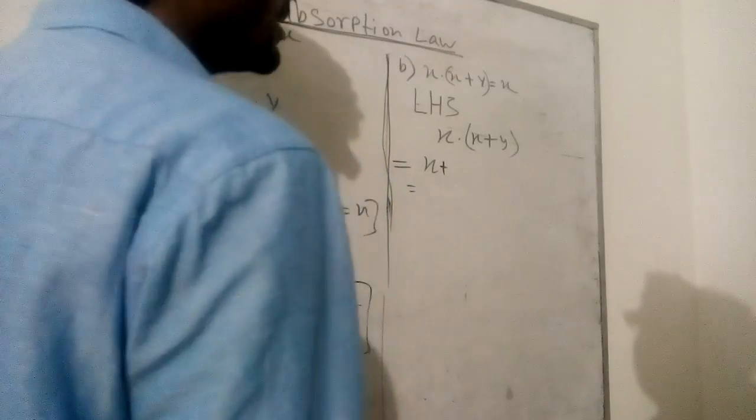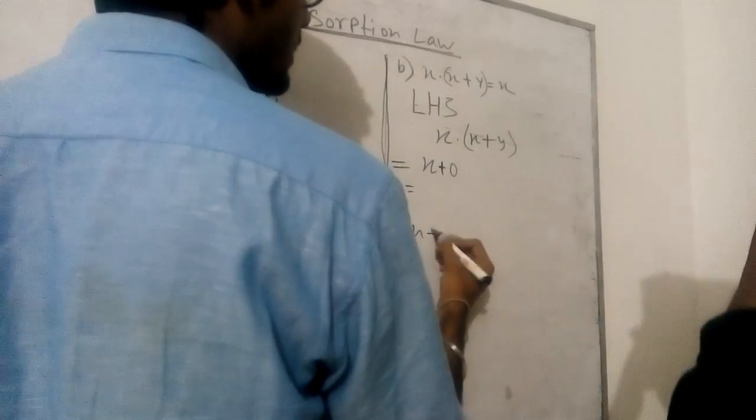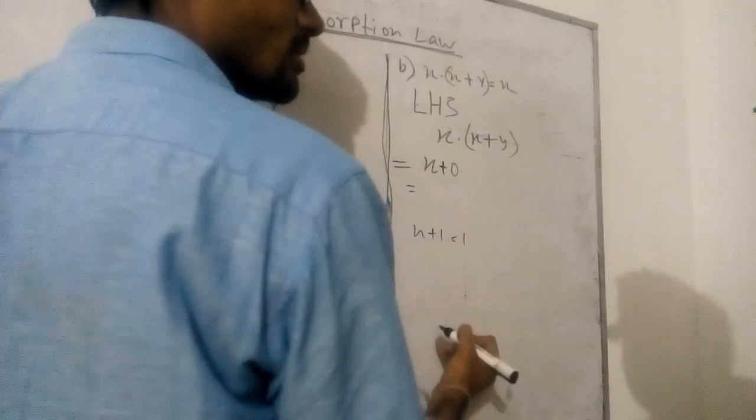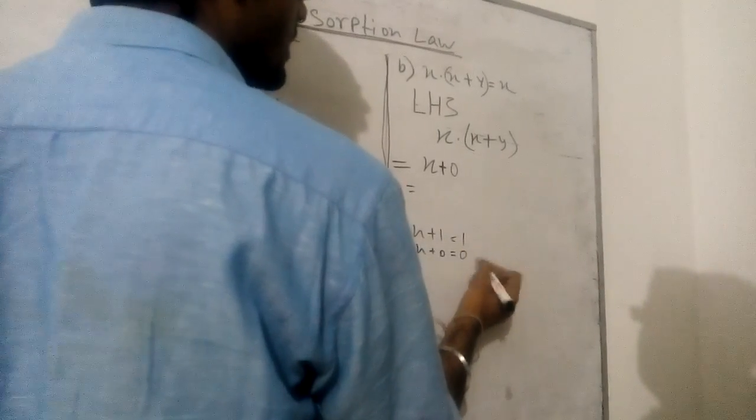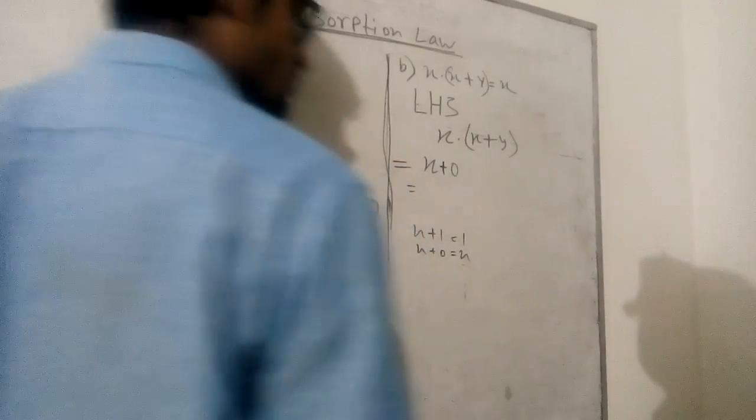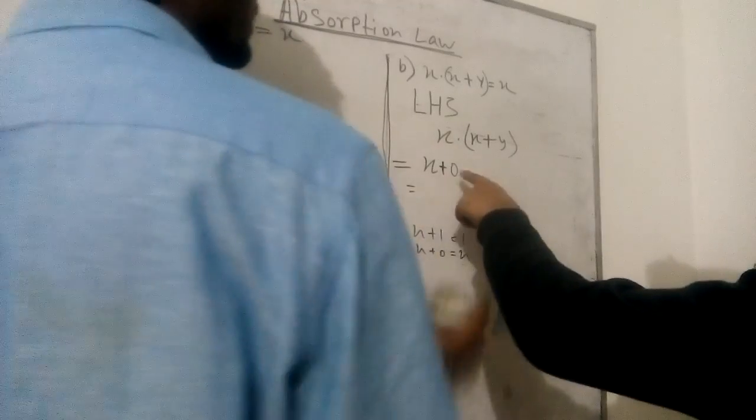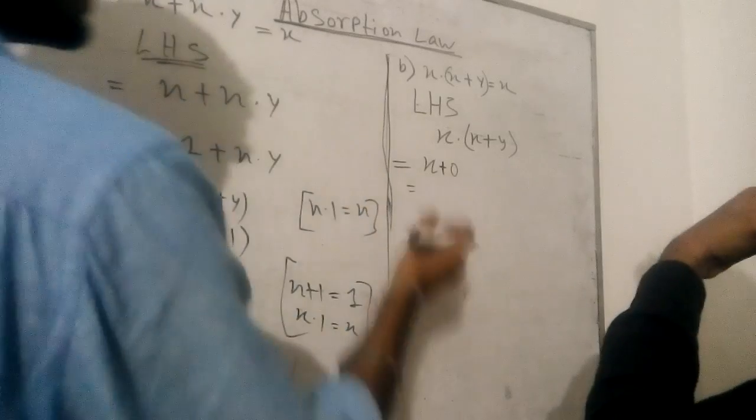One is y and the other would be 0, because if we take 1, the value will be changed. If we take 0, the value will remain the same, that is the variable. So here what should we do? We should take 0, x plus 0.